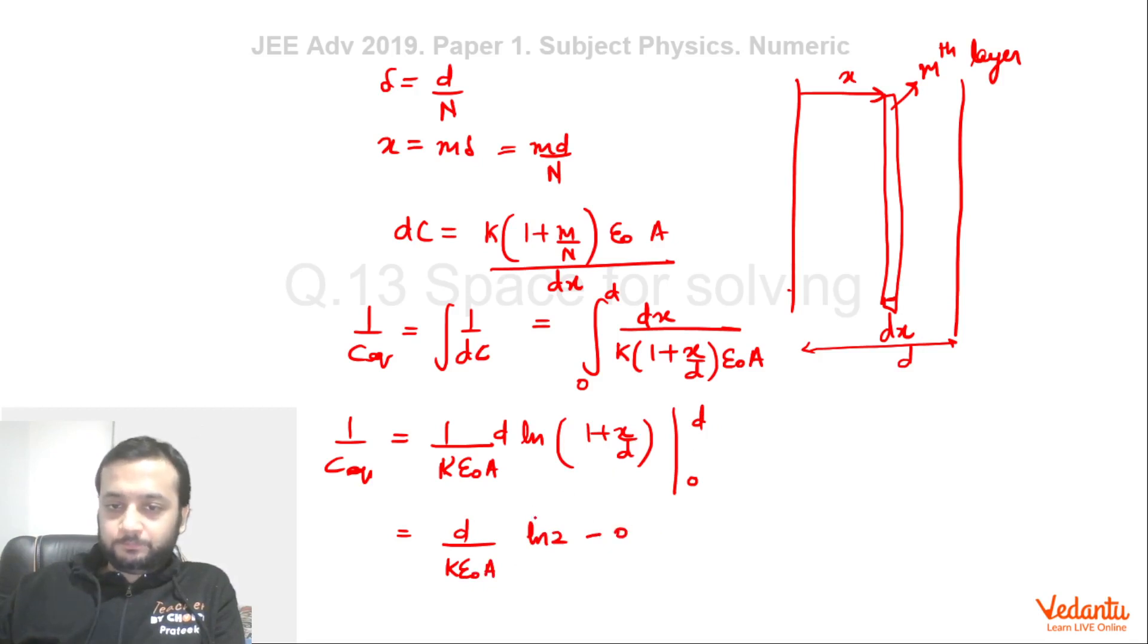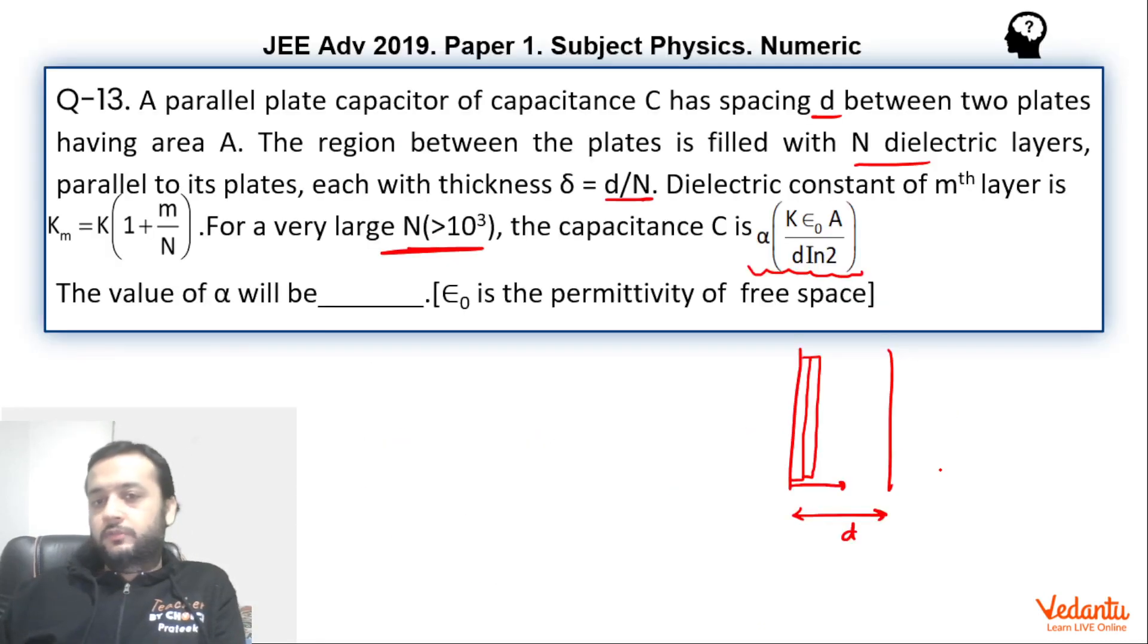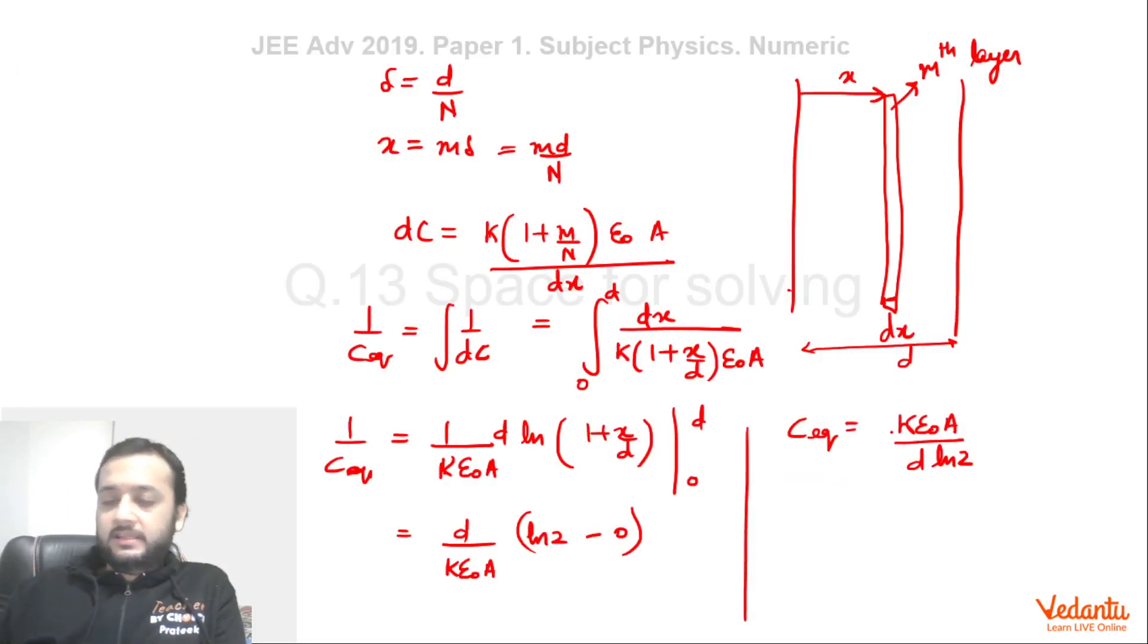Which means C_eq becomes Kε₀A/(d·ln2). So if you go back, this is exactly the term written in the brackets, and hence alpha must be 1. So as I said, the question was not very difficult—it was a simple question, and most students in India would have done this. Thank you.